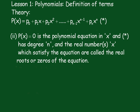Part 2: If P(x) equals 0, this is called a polynomial equation in x and has degree n. The real numbers x which satisfy the equation are called the real roots or zeros of the equation.